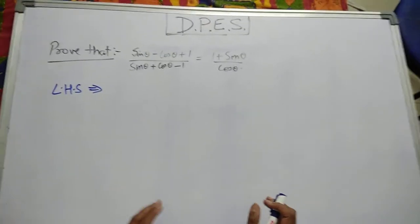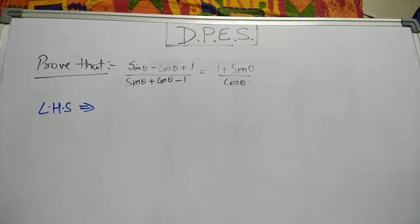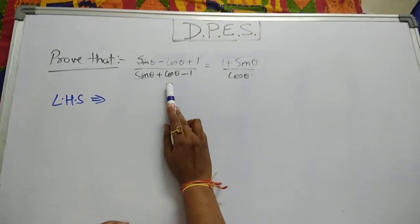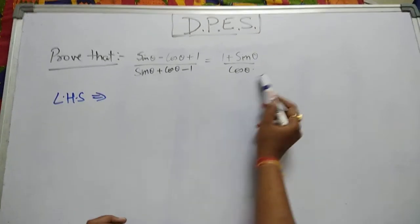In this question, what you need to keep in mind is that first we will divide all terms by cos from the LHS section because we need cos in the denominator.